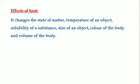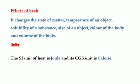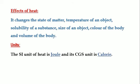What are the effects of heat? It changes the state of matter, temperature, solubility of a substance, size of an object, color of the body, and volume of the body. The SI unit of heat is joules, and its CGS unit is calorie. One calorie is equal to 4.2 joules or 4.186 joules.